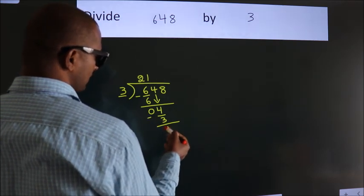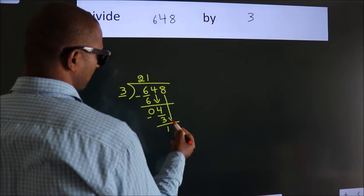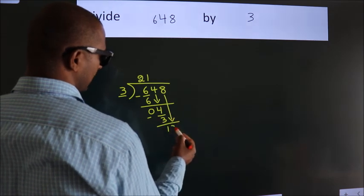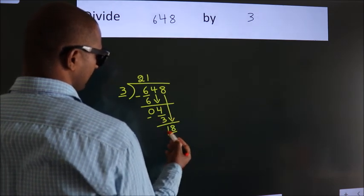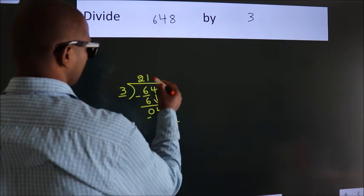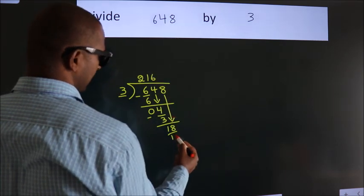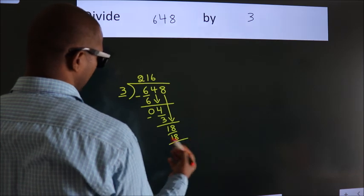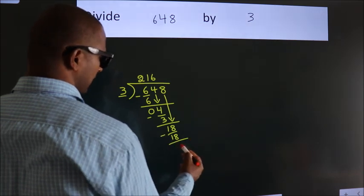After this, bring down the beside number, so 8 down, making 18. When do we get 18? In 3 table, 3 6, 18. Now, we subtract, we get 0.